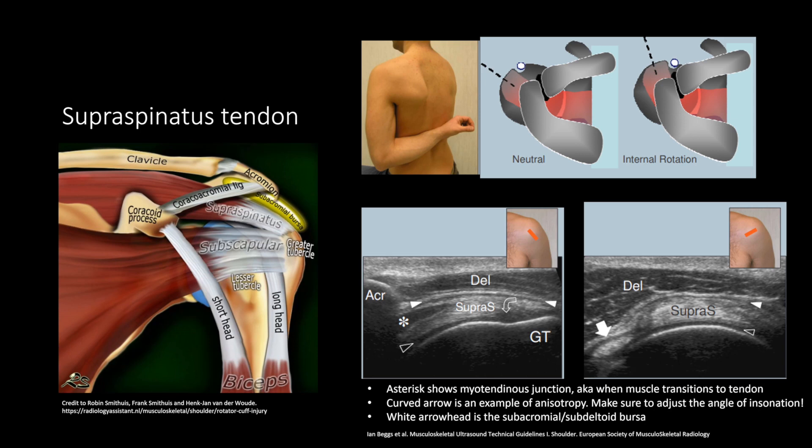The supraspinatus muscle is located in the suprascapular fossa and inserts at the greater tuberosity. You want to position the patient so the arm is internally rotated. This makes it so the supraspinatus is more of an anterior structure, making it easier to evaluate.